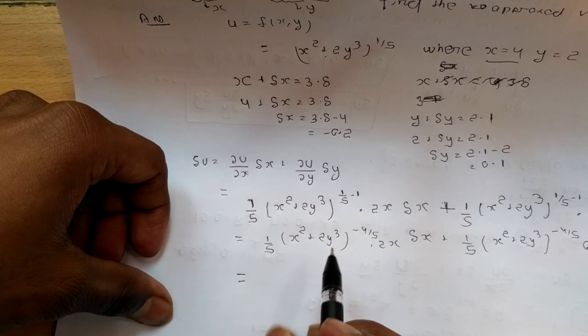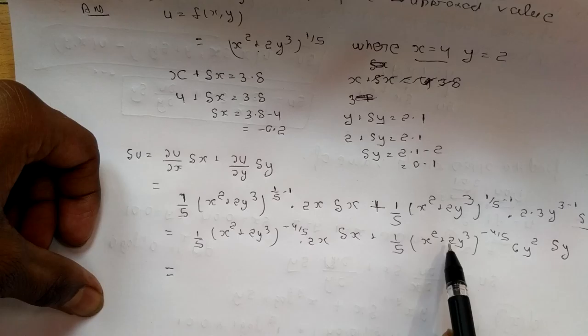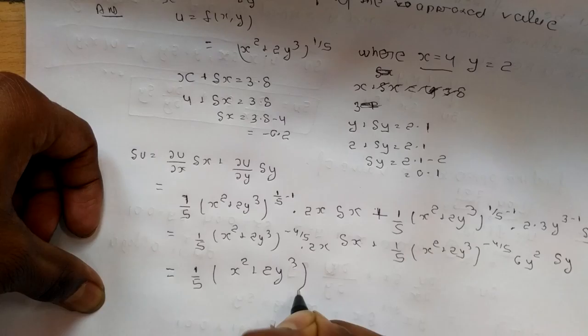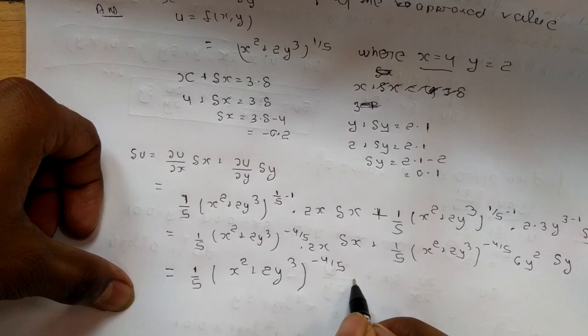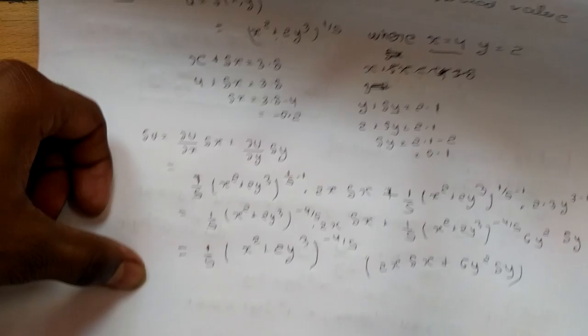यहाँ से (x² + 2y³)^(−4/5) और (1/5)(x² + 2y³)^(−4/5) — इसको हम common ले लेंगे। Common लेने के बाद अंदर में बचा: 2x·Δx + 6y²·Δy.